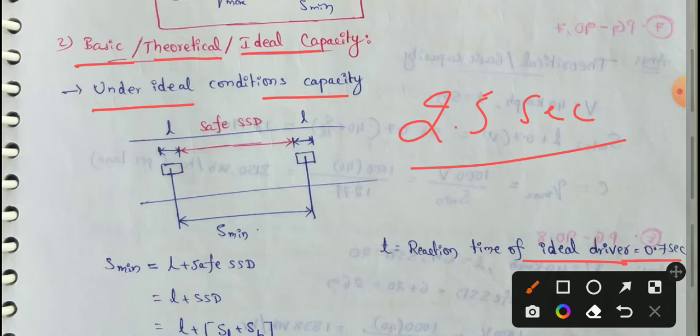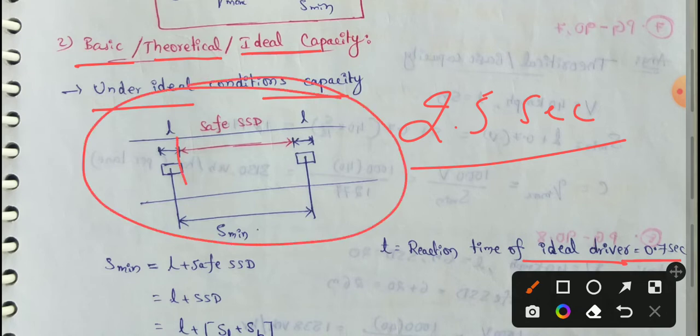Looking at this diagram, each vehicle occupies the same distance L, which represents the length of the vehicle. S minimum is the minimum space headway between two vehicles, measured from center point to center point. Basic Capacity is the maximum number of vehicles that pass a given point on a lane or roadway during one hour under ideal roadway and traffic conditions.